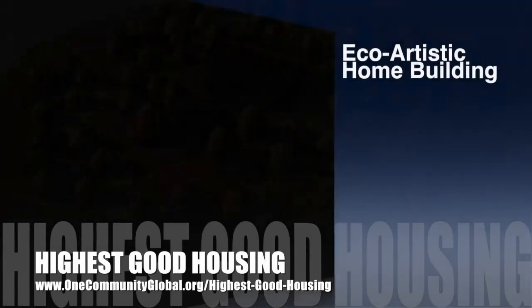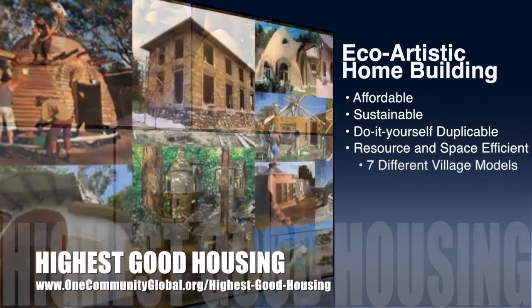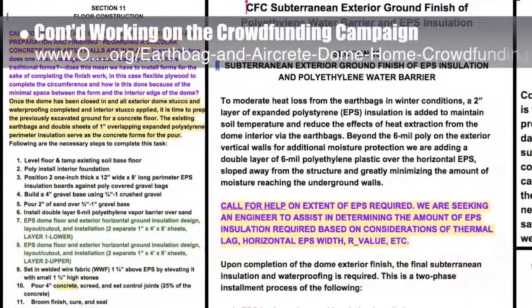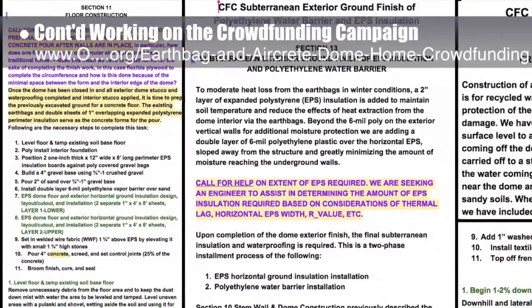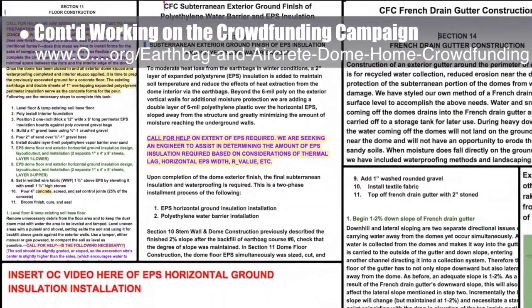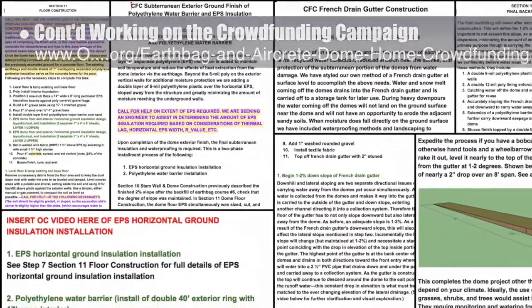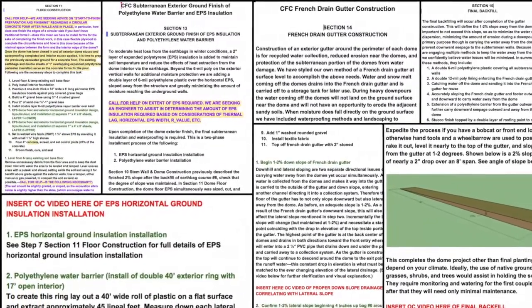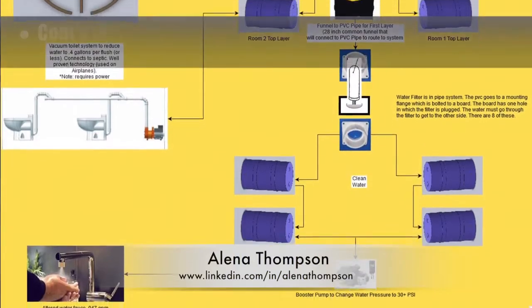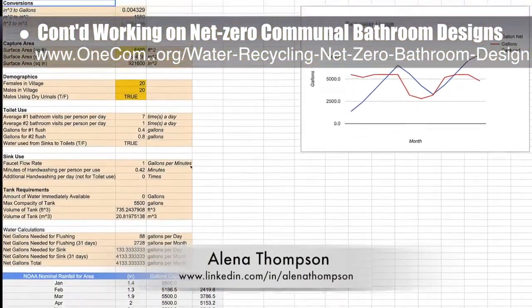One Community's approach to highest good housing is eco-artistic home building that is affordable, sustainable, do-it-yourself duplicable, resource and space efficient, and consists of seven different sustainably constructed village models. The core team, working with Ashwini Ramesh, civil engineer and project manager, put another combined total of 10 hours into the crowdfunding campaign we are developing. This week's focus was editing the excavation and construction of an earthbag dome Google doc, focusing on floor construction section 11, the subterranean exterior ground finish polyethylene water barrier and EPS insulation section 13, the French drain gutter section 14, and the final backfill. Elena Thompson, mechanical engineer, completed her fourth week helping with the net zero communal bathroom designs, further developing water storage, piping and use details, and running initial catchment calculations.